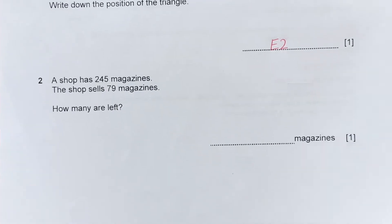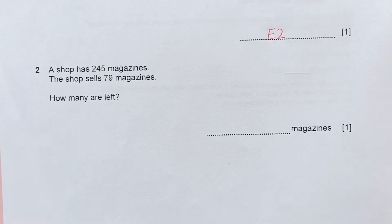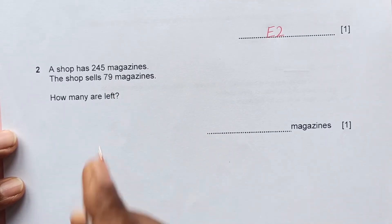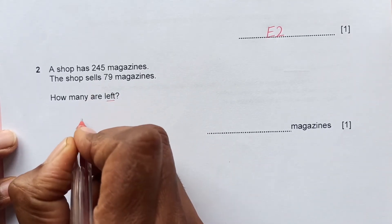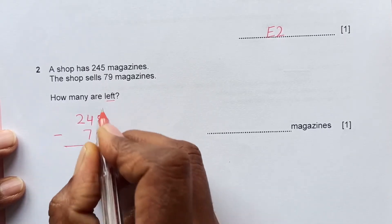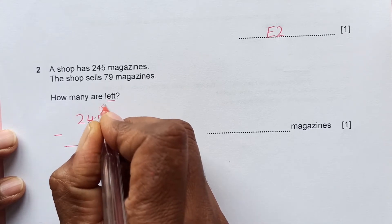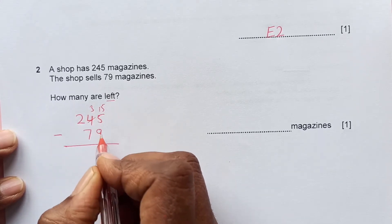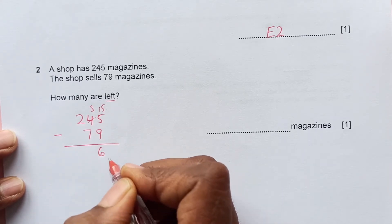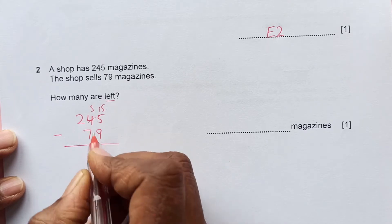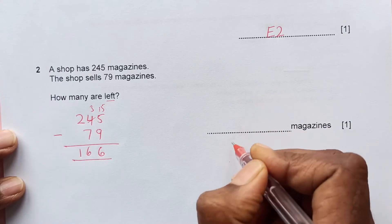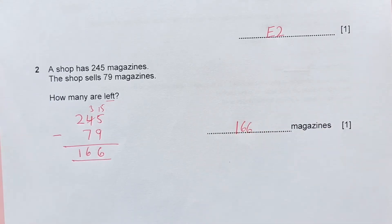Question 2. A shop has 245 magazines. The shop sells 79 magazines. How many are left? It's just subtraction: 245 minus 79. This is 15. We take 1 from here. 15 minus 9 is 6. Then 13, this will be 6 and 1. So the final answer is 166.